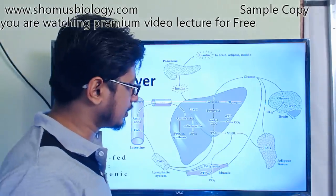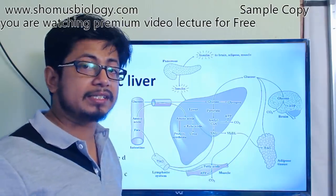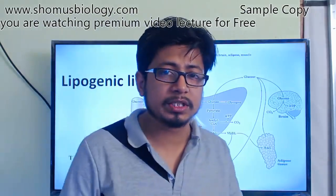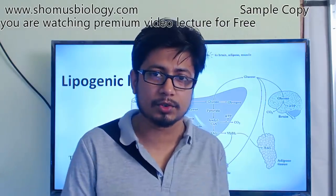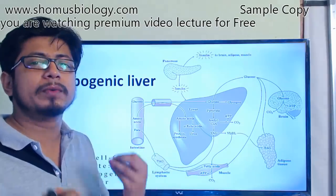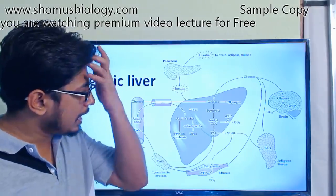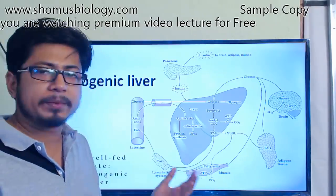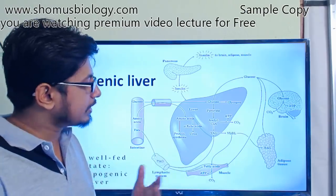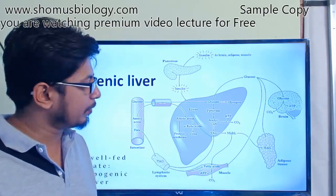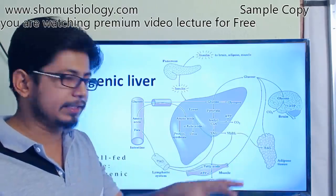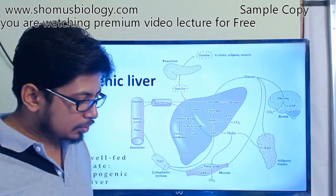The remaining acetyl-CoA is an important ingredient to produce triacylglycerol (TAG). So even though glucose is the simplest form of sugar, in the lipogenic phase it is converted into TAG. This TAG is then packaged into VLDL — very low density lipoprotein — and stored in the adipose tissue of the body for future use.